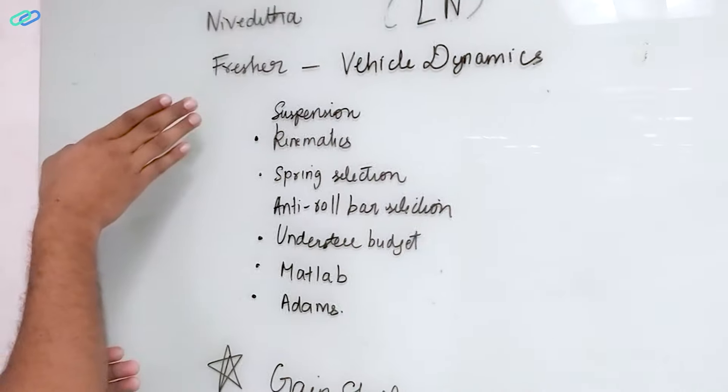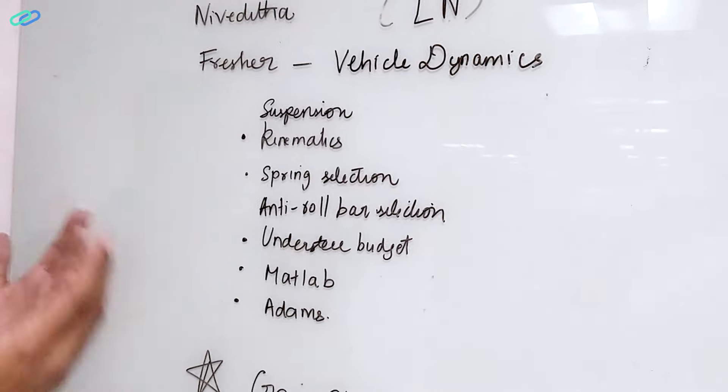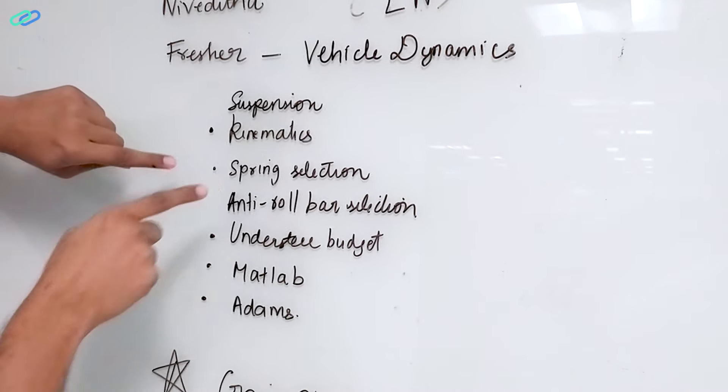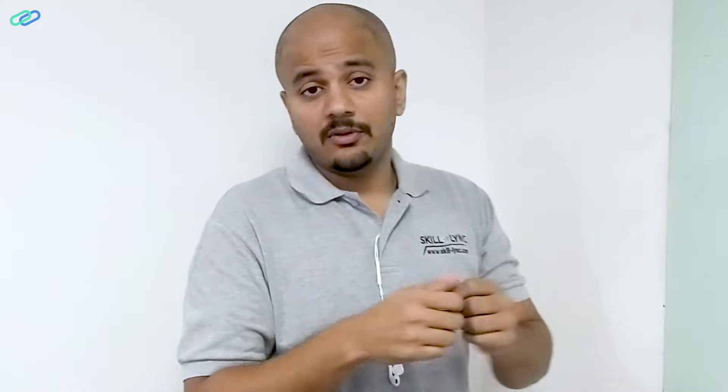But if you've already read a book on vehicle dynamics, then you should focus on slightly advanced topics like spring selection, how to select the anti-roll bar, and how to calculate the understeer budget.